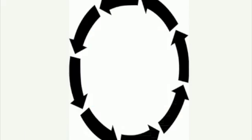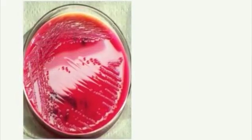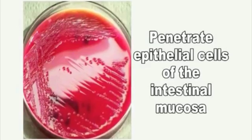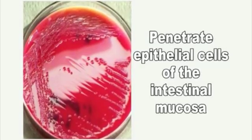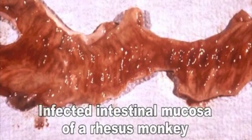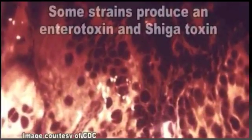The disease is caused when virulent Shigella organisms attach to and penetrate epithelial cells of the intestinal mucosa. After invasion, they multiply intercellularly, resulting in tissue destruction. Some strains produce enterotoxin and Shiga toxin.